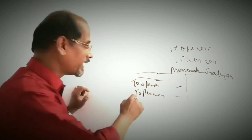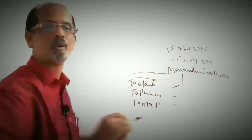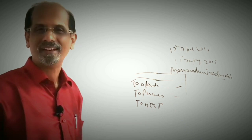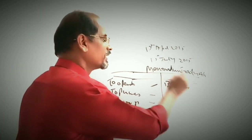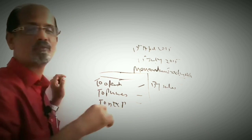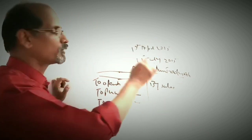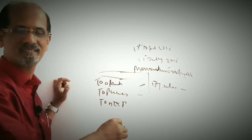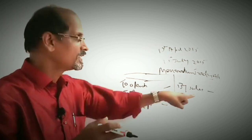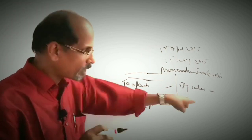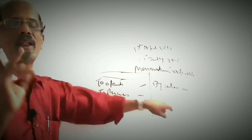Then you will have to take the direct expenses during that period. Then you will have to take sales during the period from 1st April to 1st July. The only unknown item is closing stock, so you will have to find out the closing stock at the date of fire — that is our answer.